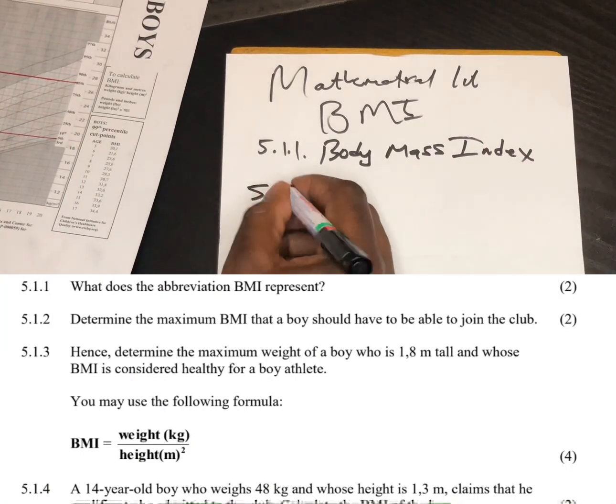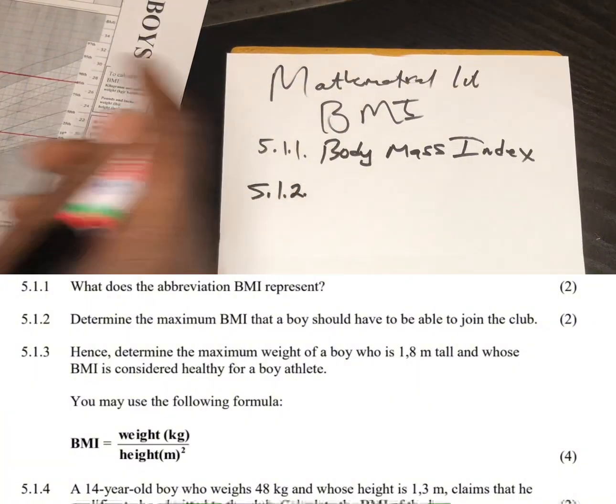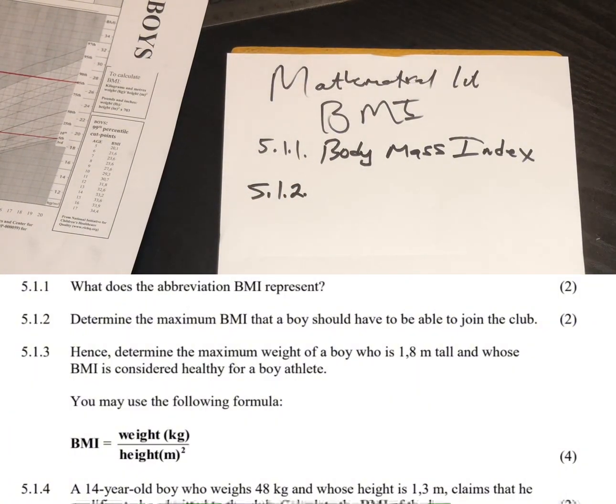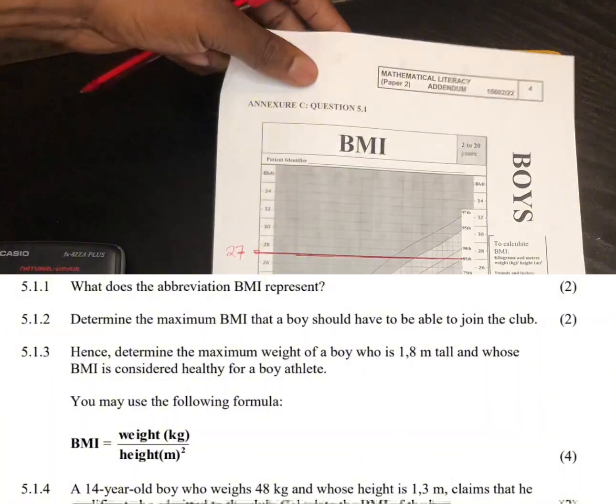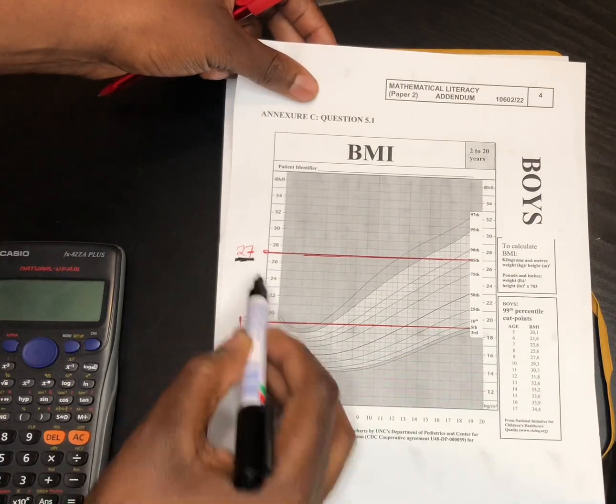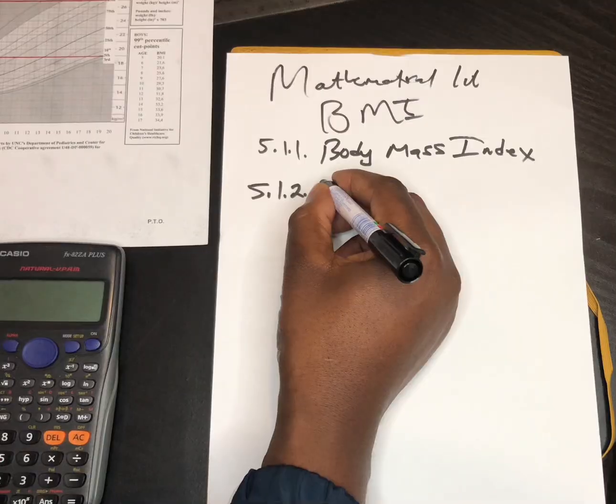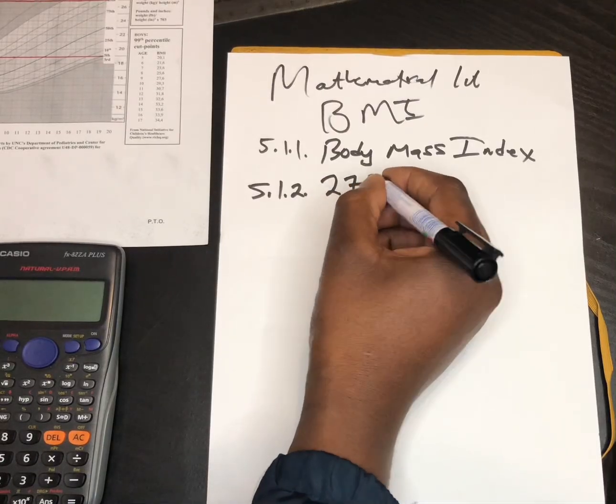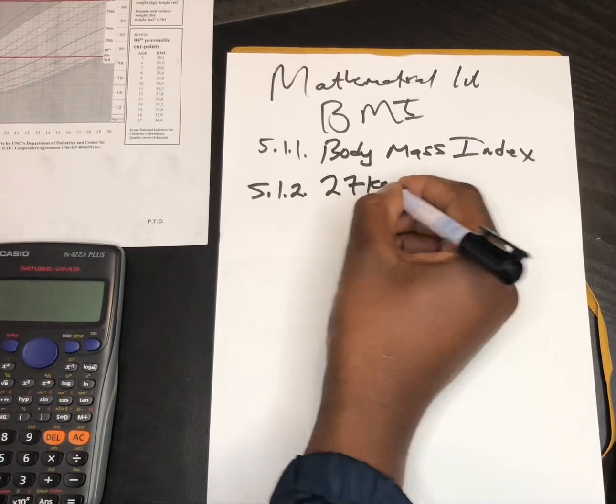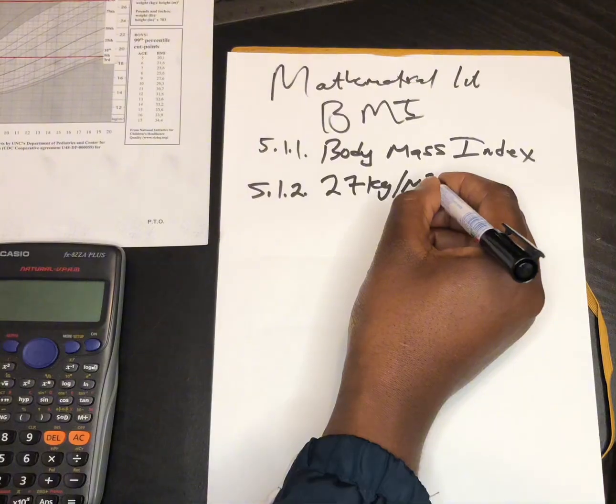Then 5.1.2. It says determine the maximum BMI that a boy should have to be able to join the club. We already discussed about this. We said the maximum is going to be this. So to answer this one is very simple. We just have to say 27 kg per meter squared.